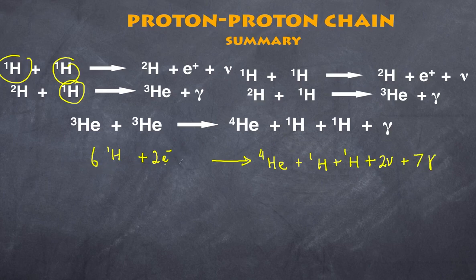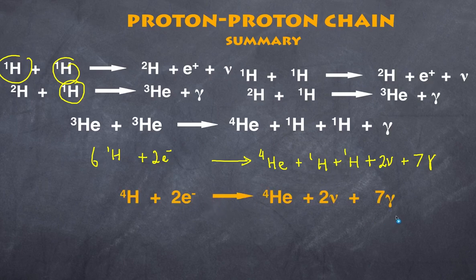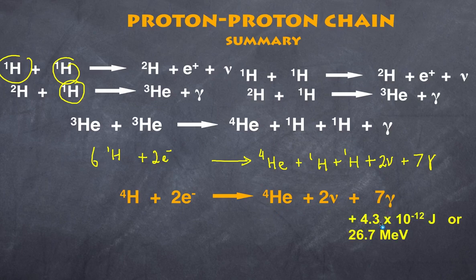Using six hydrogens and returning two, the net summary equation is: 4H + 2 electrons → 1 helium nucleus + 2 neutrinos + 7 gamma photons, releasing 4.3 × 10⁻¹² joules or 26.7 MeV. A small portion of this energy is carried away by the two neutrinos, which is why the sun emits neutrinos. That is the proton-proton chain, producing a single helium nucleus from four hydrogen atoms.